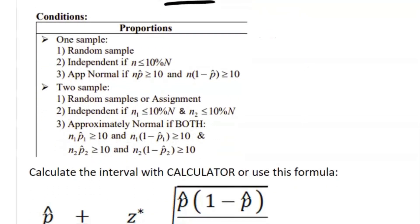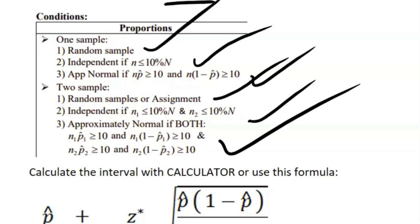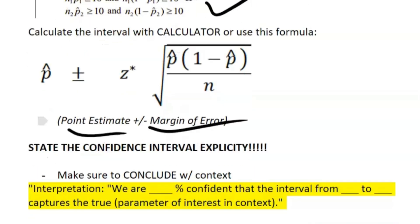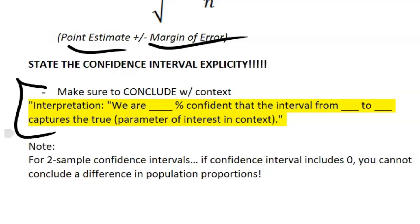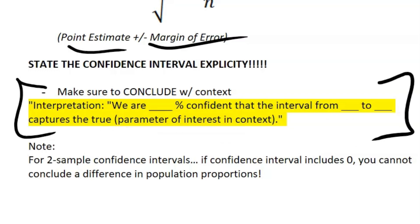Conditions were covered in sampling distributions: random sample, independence based on the 10% condition, and large counts. For two-sample, you have to check all of these for both samples — random sample, 10% condition, and large counts for each. To calculate the actual interval, use your calculator, which is highly recommended, or use the formula: point estimate plus or minus the margin of error, which is the z* value times the standard deviation. Finally, conclude in context.